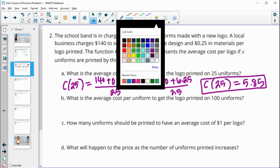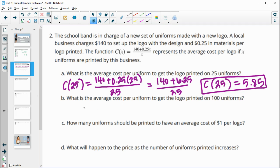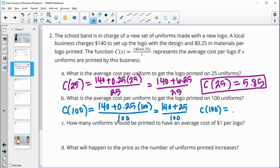B, what is the average cost per uniform to get 100? So now we'll plug in 100. We'd have 140 plus 0.25 times 100, and then divided by 100 to get the average. So on top, that's going to be 140 plus 25, divided by 100. So the average cost of 100 uniforms is going to be $1.65. You can see that the average cost went significantly down when we increased the number of logos we're doing.